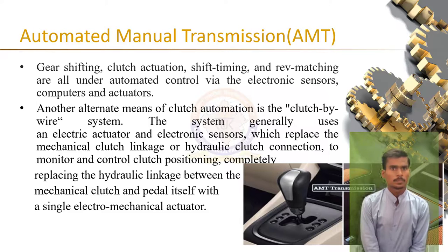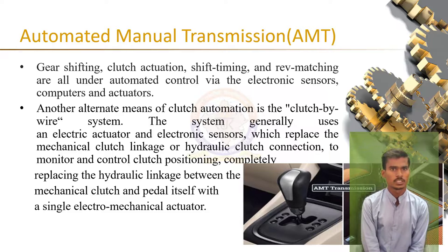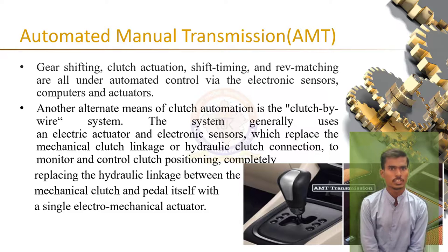There are various types of automatic transmission systems in use today. First is the Automated Manual Transmission (AMT). As the name suggests, its prime function is to automate the manual transmission system, which means the job of pressing the clutch and shifting the gear by a stick no longer rests with the driver.